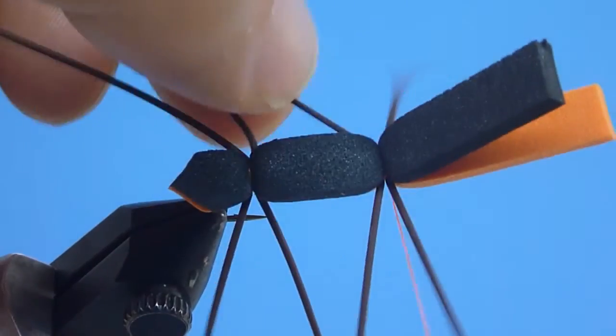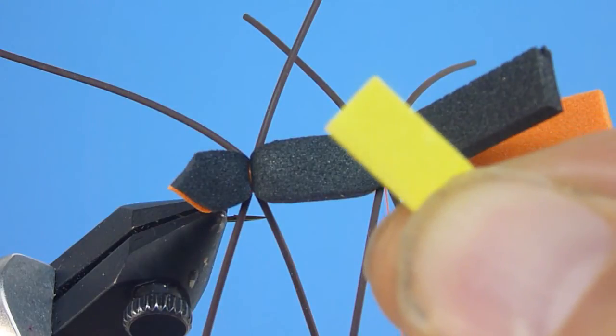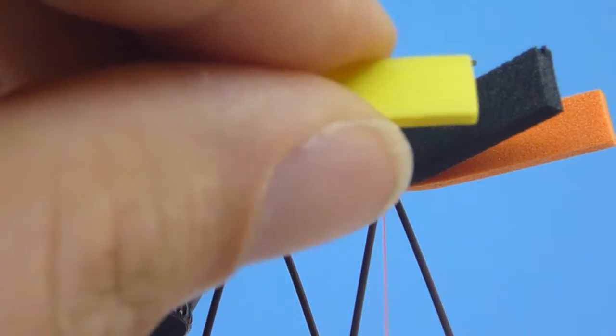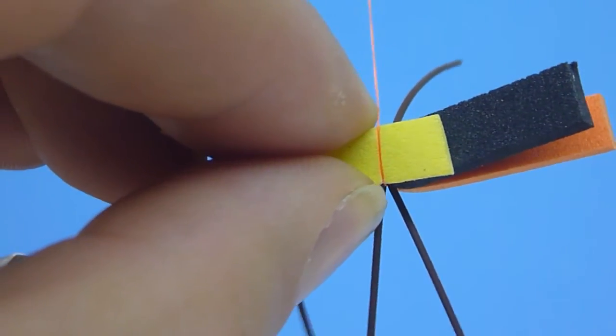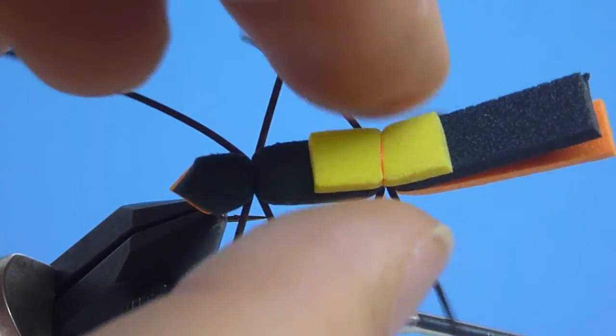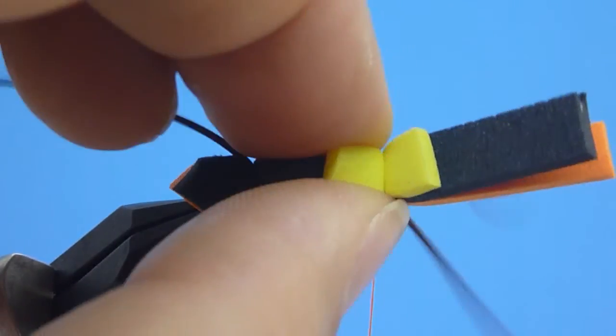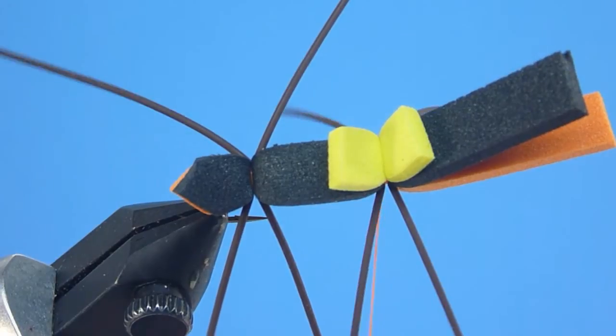we'll next take a moment to prepare ourselves an indicator dot by trimming a short quarter to three-eighths inch long tab from our pre-cut yellow foam strips. With the yellow tab placed neatly atop our black foam's front and squarely above where we just lashed our legs, we'll then go ahead and bind in our yellow indicator dot with a few well-placed, tight-wound thread wraps made directly overtop one another.